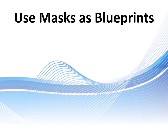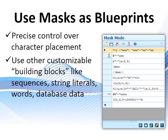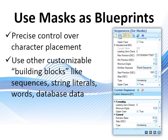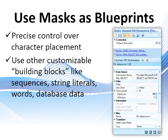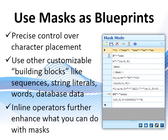Use masks as blueprints for your keycodes and passwords. Masks not only give you precise control over the placement of characters, but they allow you to use more sophisticated, customizable building blocks, like sequences, words, or even items from a database, which you can then further manipulate using various options and operators.